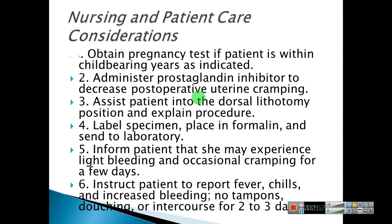Nursing and patient care considerations: obtain a pregnancy test if patient is within childbearing years as indicated. Administer a prostaglandin inhibitor to decrease postoperative uterine cramping. Assist patient into the dorsal lithotomy position and explain the procedure. Label specimen, place in formalin, and send to laboratory. Inform patient she may experience light bleeding and occasional cramping for a few days. Instruct patient to report fever, chills, and increased bleeding. No tampons, douching, or intercourse for two to three days.